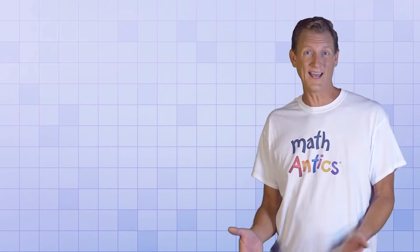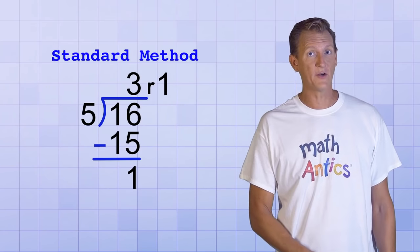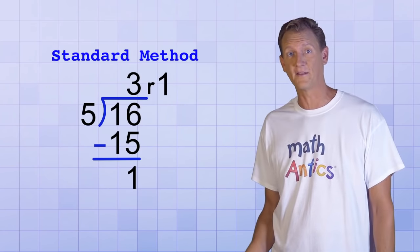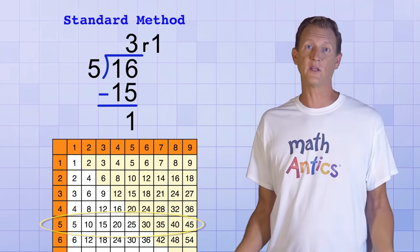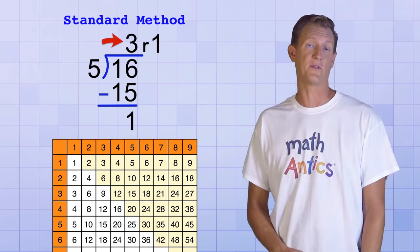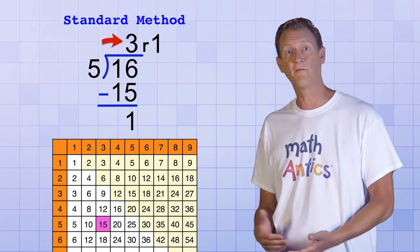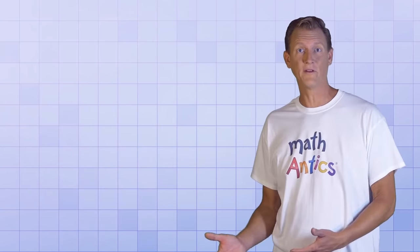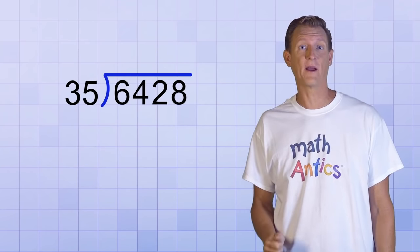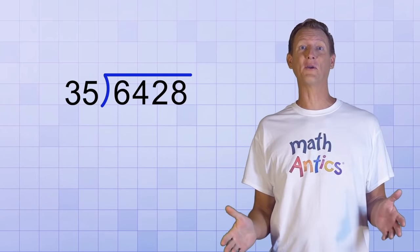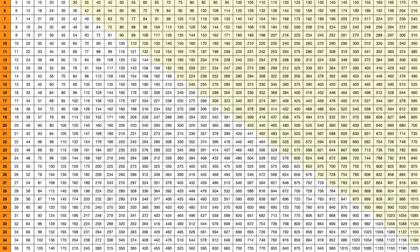You might be thinking that method seemed like a bit more work than the standard method. Well, yes, but that's because in the standard method we were helped out by already knowing our multiplication facts for multiples of 5. That meant we could easily determine that 3 was the best choice. But what if we were given a much tougher division problem, like 6,428 divided by 35? I don't have my multiplication table memorized all the way out to the 35's.